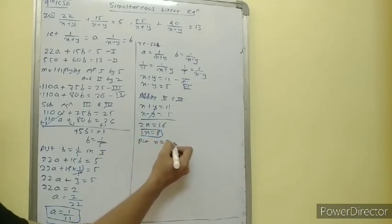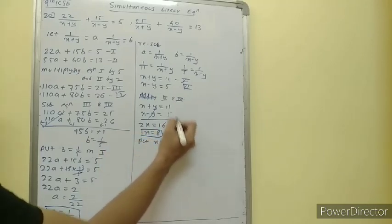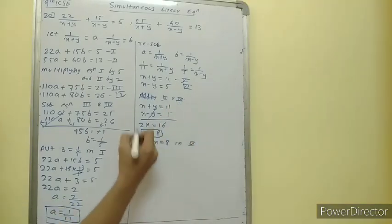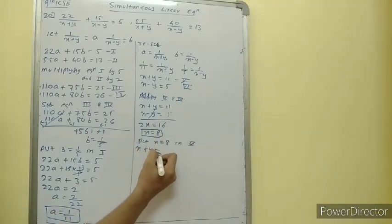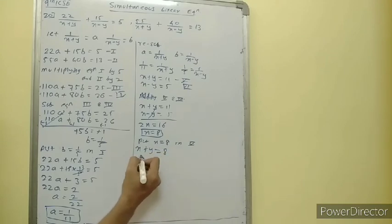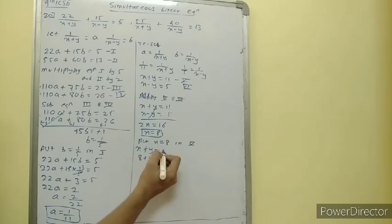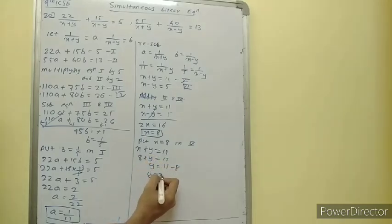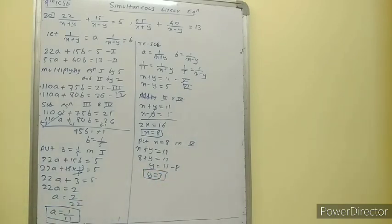Name these equation 5 and equation 6. We have plus y and minus y, so adding equations 5 and 6: x plus y is equal to 11, x minus y is equal to 5. The y's cancel; 2x is equal to 16, so x is equal to 8. Put x equal to 8 in equation 5: x plus y is equal to 11, so 8 plus y is equal to 11, y is equal to 3. We have the value of x and y.